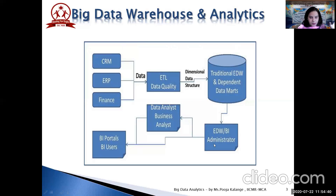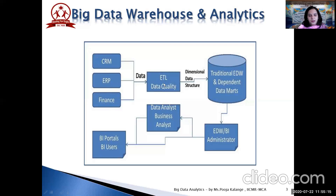After that, we will develop reporting and analysis applications — these could be reports, dashboards, or multi-dimensional cubes which are being used. Finally, we will develop the analytics module, churn the models, see the customer segmentation models, see the pricing models, and then complete the cycle. Comparing this with the big data analytics process: data comes from CRM and ERP modules, then goes into the ETL — extraction, transforming, loading — process which is part of data warehousing. The data structure is stored into the traditional enterprise data warehousing or dependent data mart, and is analyzed by the enterprise data warehousing or BI administrator.